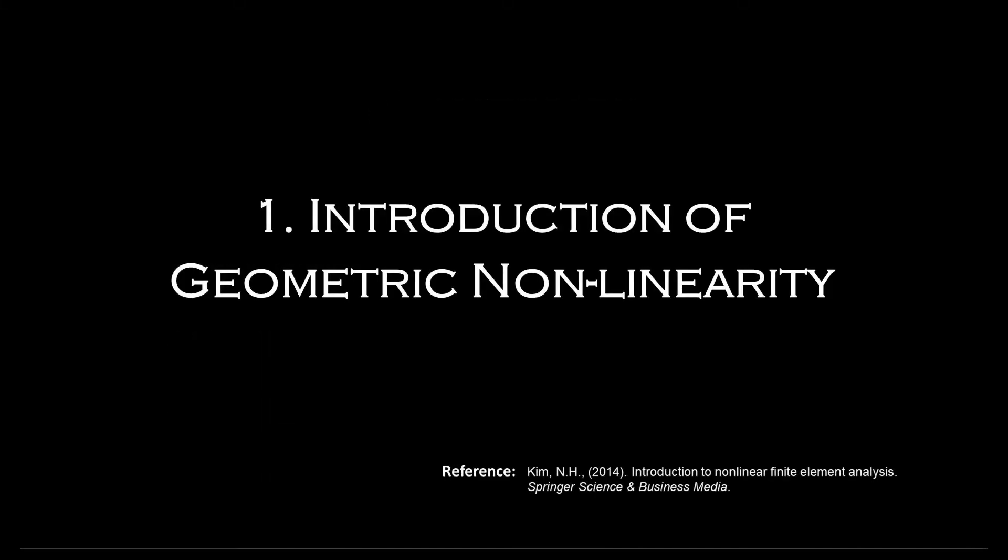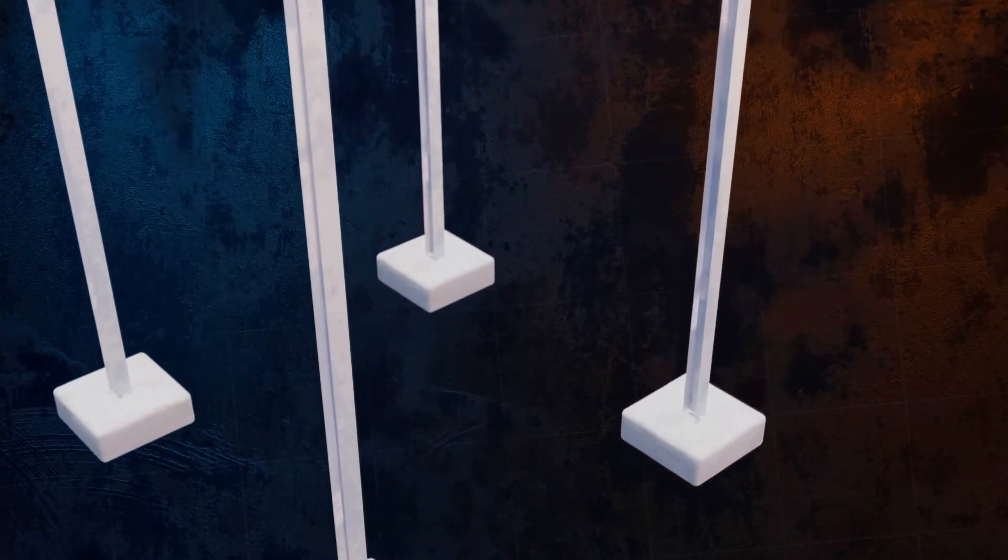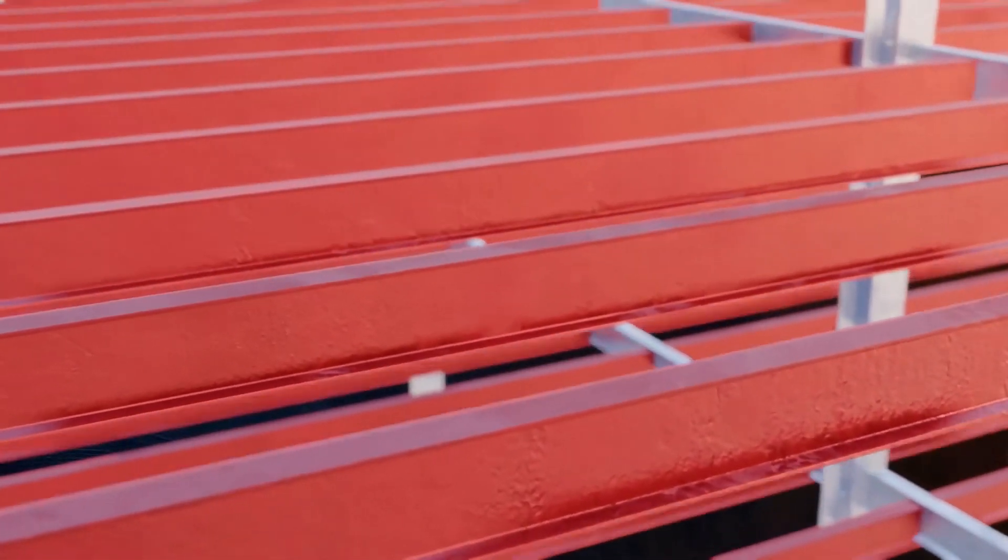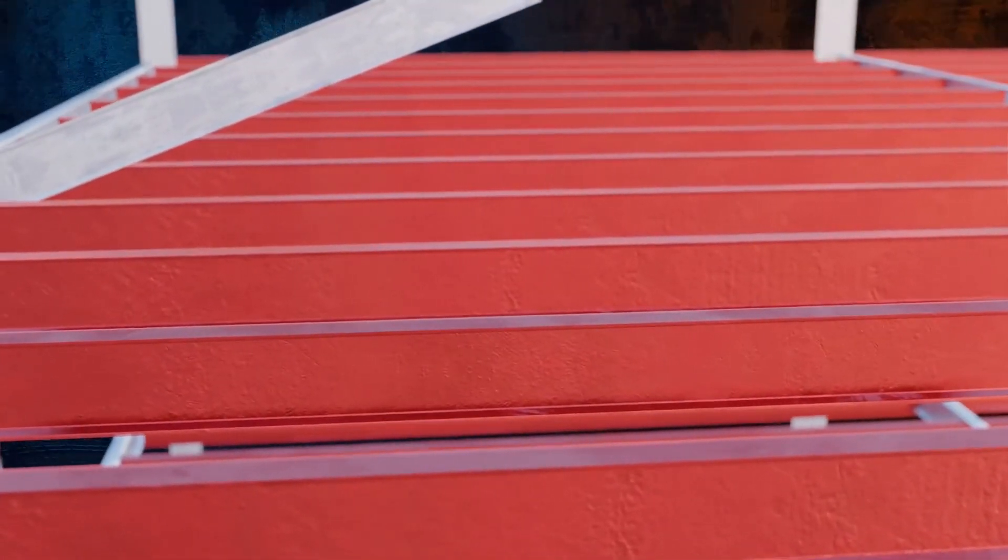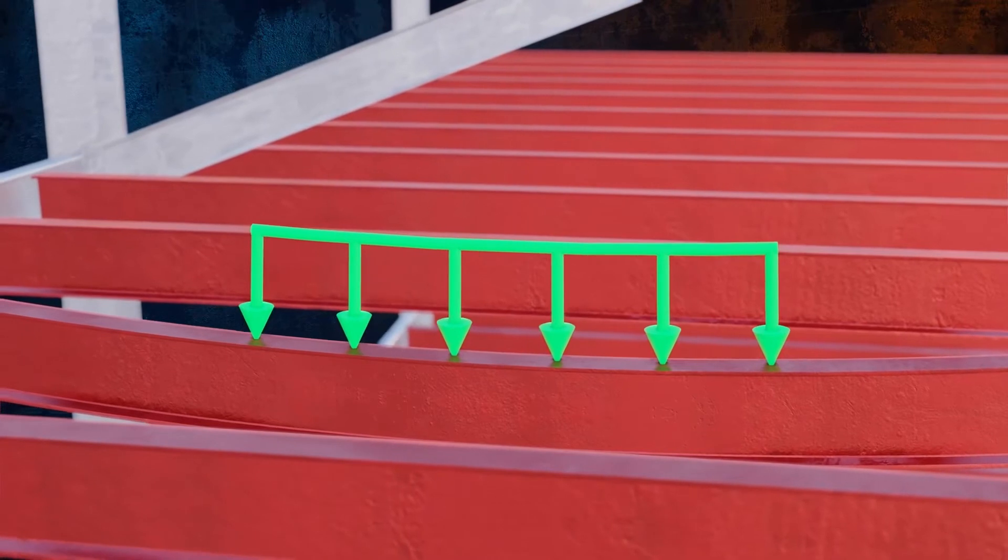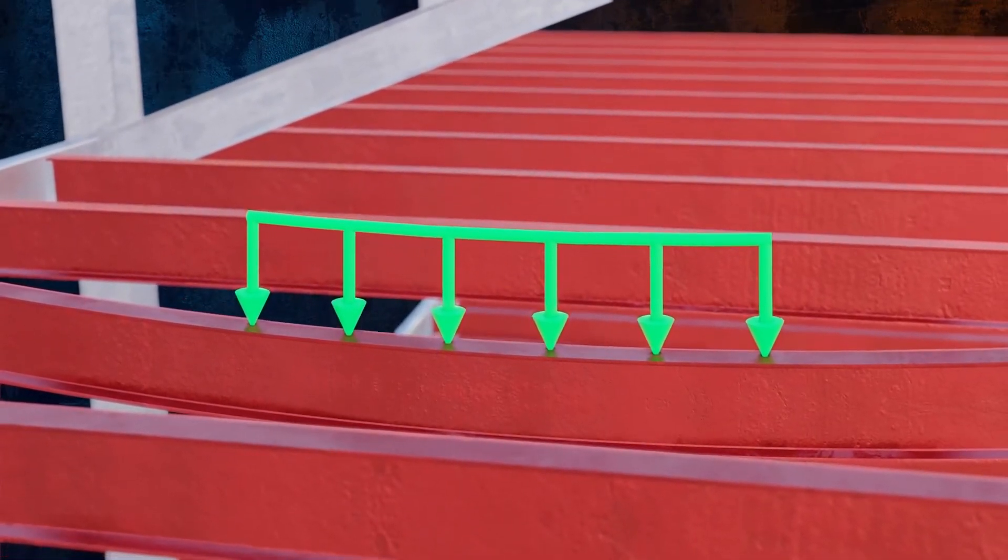In order to explain nonlinear systems, it is necessary to define linear systems first. A linear system is defined such that the relationship between input and output is linear. Specifically, in structural mechanics, the relationship between applied load input and displacement output is linear.